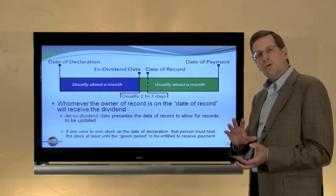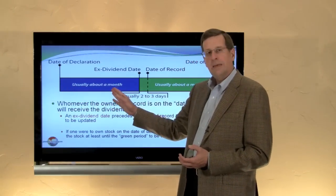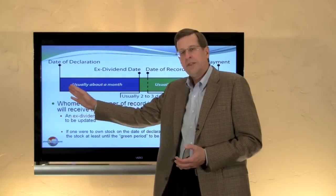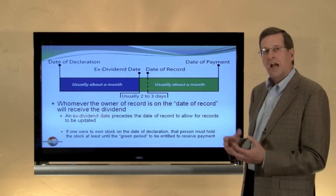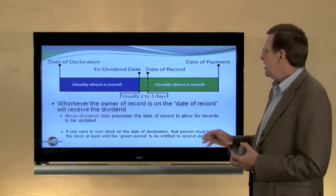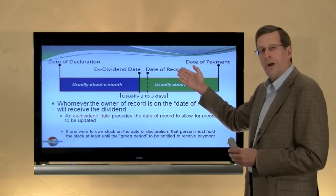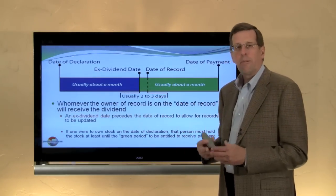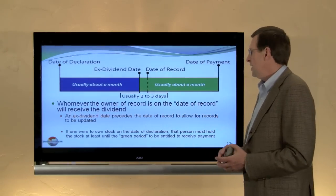The ex-dividend date determines when the right to receive the dividend shifts. So if you own stock on the date of declaration but sell it before the ex-dividend date, you lose the right to receive that dividend. If you own the stock on the date of declaration and continue to hold it beyond the ex-dividend date, then when you sell the stock you will have retained the right to receive the dividend. The ex-dividend date usually precedes the date of record, which is the formal date when a company looks at its shareholder records to determine who to distribute dividends to on the date of payment. For practical record-keeping purposes, the ex-dividend date typically precedes the stipulated date of record by two or three days.